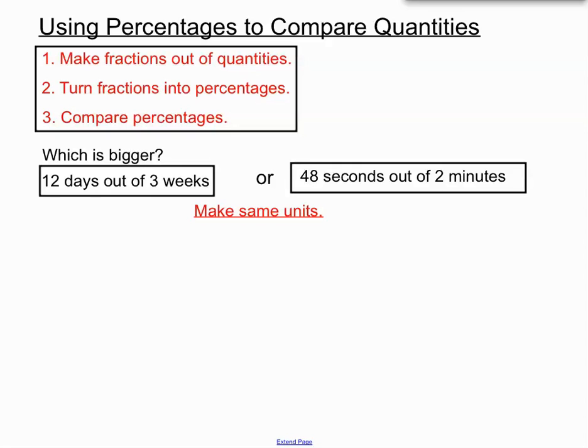So our first step is to make some of the units talk to each other. So instead of 12 days out of 3 weeks, it would be best for us to say 12 days out of 21 days. Because with each week having 7 days, 3 weeks will have 21 days. It just makes it easier for those to be talking the same units. And over on the right hand side here, instead of 48 seconds out of 2 minutes, we're going to say okay, each minute has 60 seconds in it. So we're going to turn that into 48 seconds out of 120 seconds.